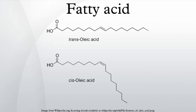The rigidity of the double bond freezes its conformation and, in the case of the cis isomer, causes the chain to bend and restricts the conformational freedom of the fatty acid. The more double bonds the chain has in the cis configuration, the less flexibility it has. When a chain has many cis bonds, it becomes quite curved in its most accessible conformations. For example, oleic acid, with one double bond, has a kink in it.